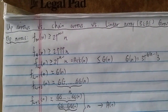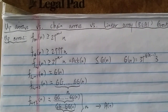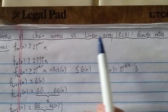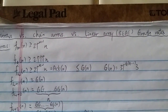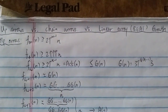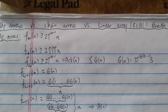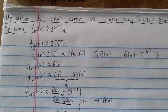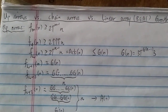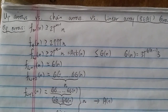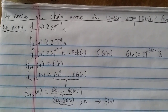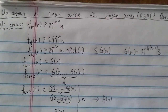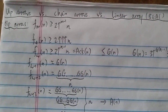Hi everyone. Today I want to talk about the comparison of the growth rate between up arrows, chain arrows, and the linear array notation from BEAF. This is a request because some people said they don't quite understand how chain arrows and linear array work. They understand up arrows and what f(ω+1), f(ω+2), f(ω+ω) looks like. What does that look like in up arrows, chain arrows, or BEAF? So let's get started.